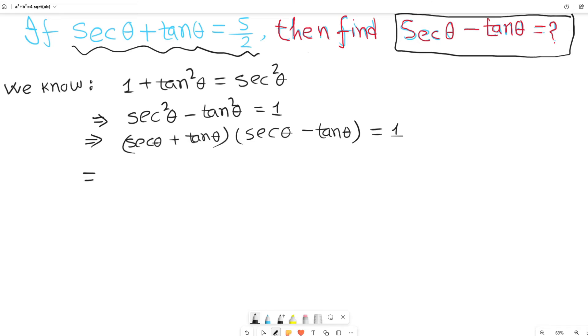Now here is given sec theta plus tan theta is equal to 5 over 2, so we can write this part as 5 over 2. Then 5 over 2 multiplied by sec theta minus tan theta is equal to 1. Look here, sec theta minus tan theta is what we need to find, so we are very close to our answer.